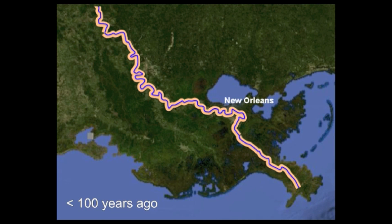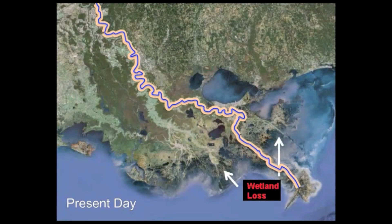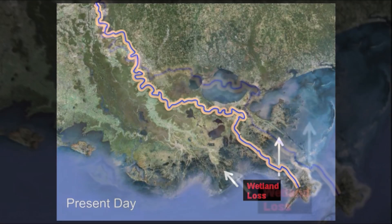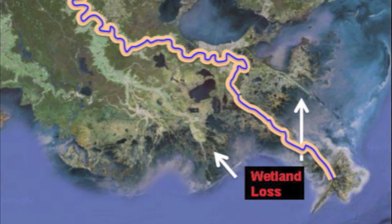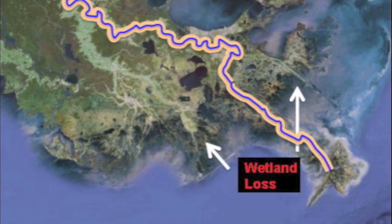Levees prevented natural sediment delivery to the wetlands in the delta. Instead, sediment was shunted offshore into deep water, and the wetlands sitting atop compacting sediment began deteriorating.